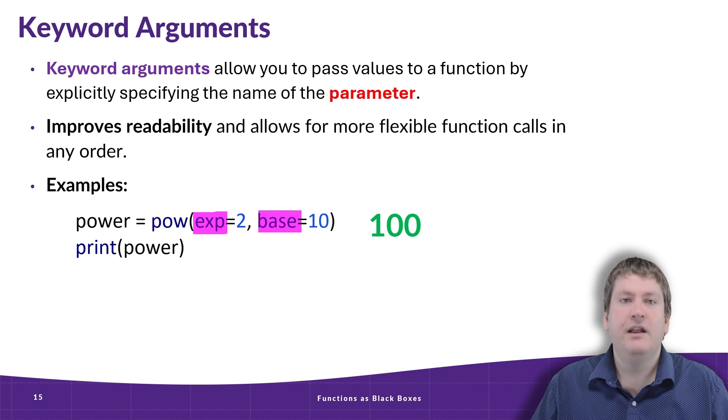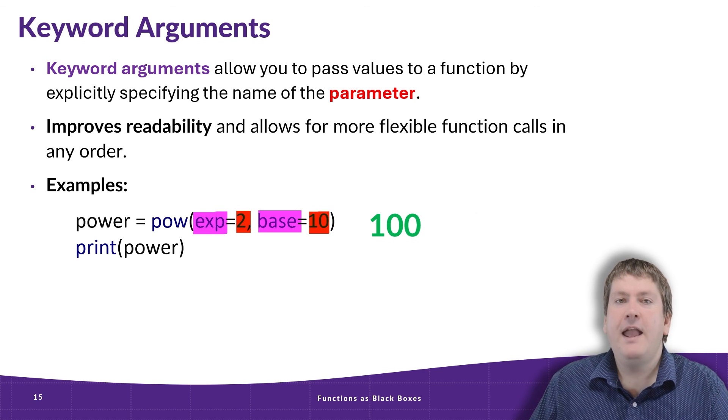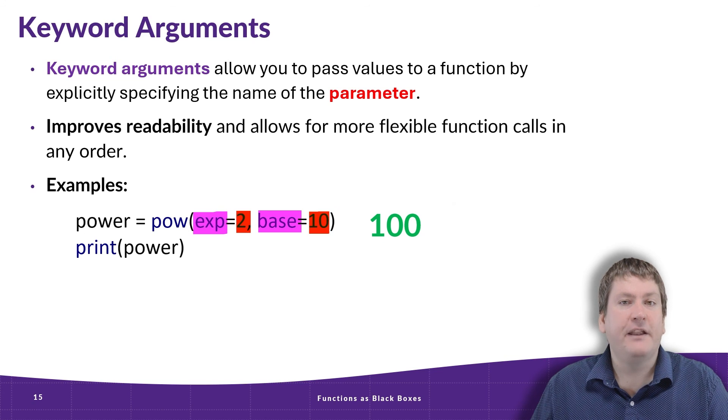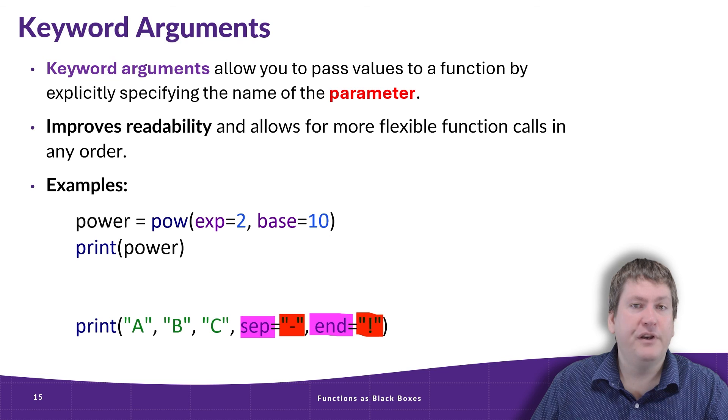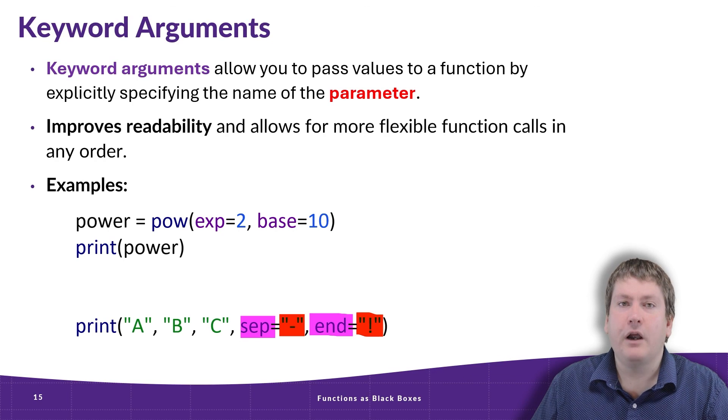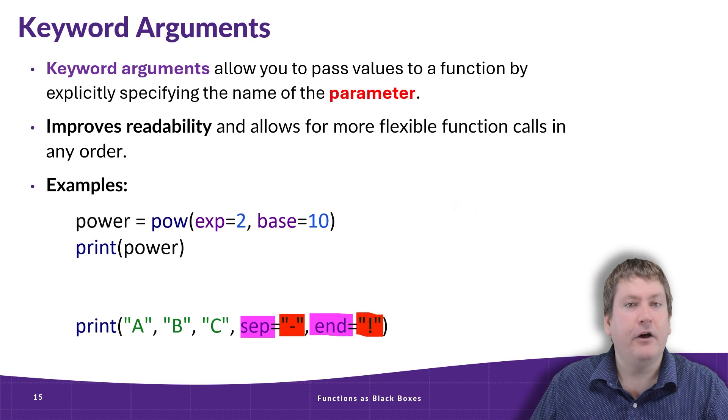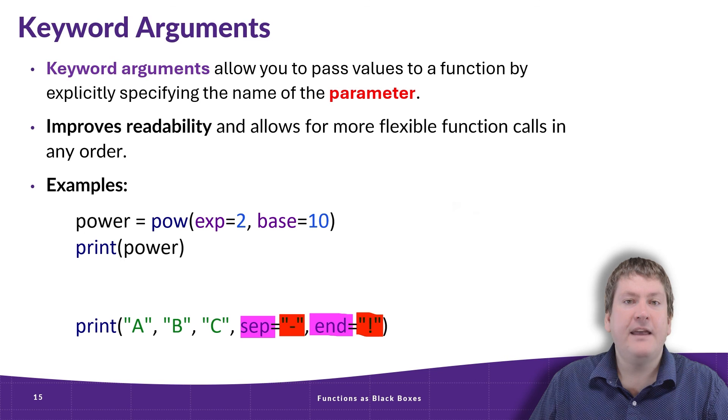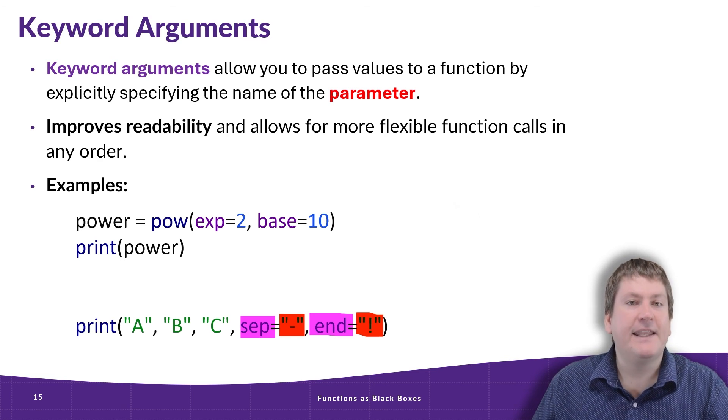So in this case, we're saying exp is getting the argument of 2, the value of 2, and the base parameter is getting the argument of 10. As another example, and one we saw before in our print video, was that the print function has some optional parameters that we can specify keyword arguments for by actually saying the parameter name. So the sep parameter sets that character or string that occurs between all the values sent to print, and the end parameter specifies the character or string that's going to happen at the end of that line.